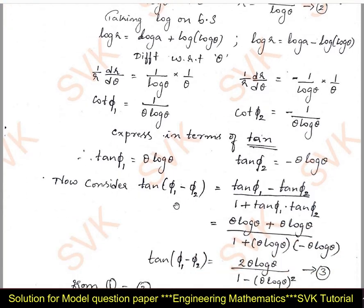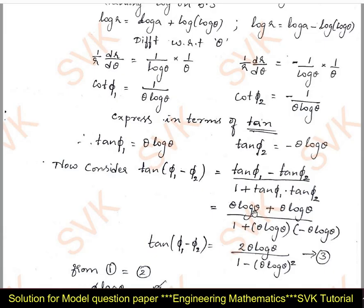Now, the formula for the angle between two curves is: tan(φ₁ − φ₂) = (tan φ₁ − tan φ₂)/(1 + tan φ₁·tan φ₂). Substituting the values: numerator becomes θ·log θ minus (−θ·log θ), and the denominator becomes 1 + (θ·log θ)·(−θ·log θ), which gives 1 − (θ·log θ)².